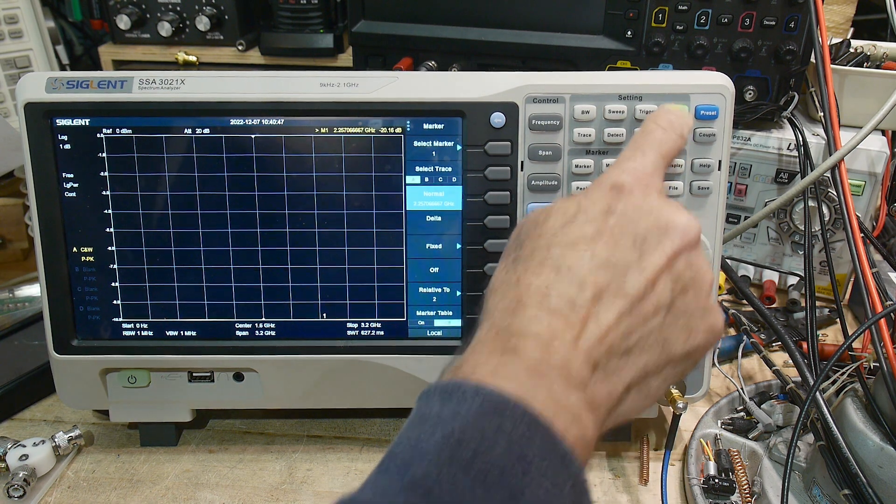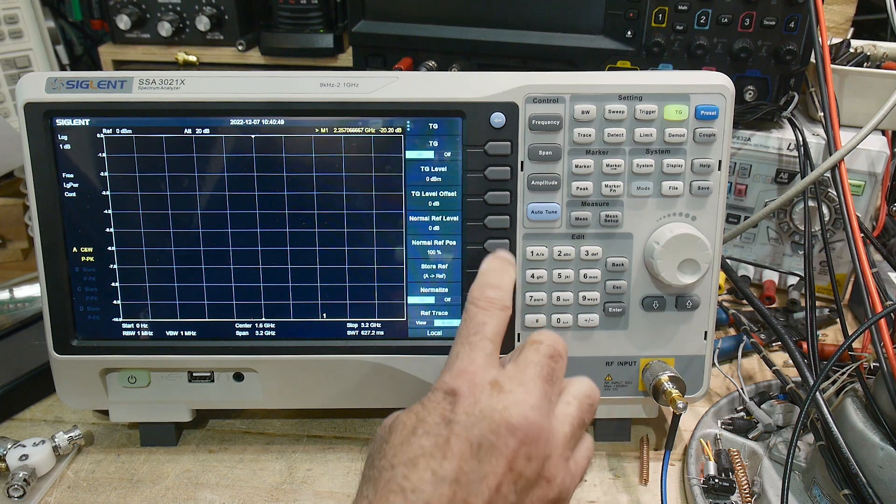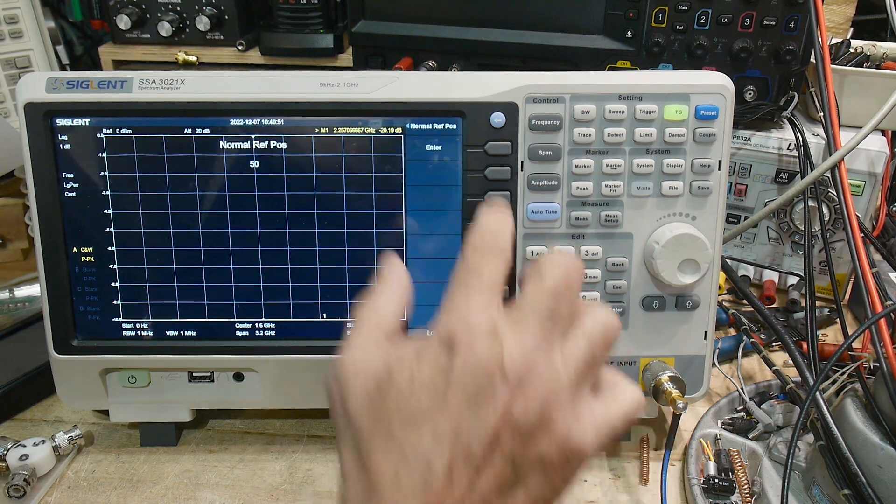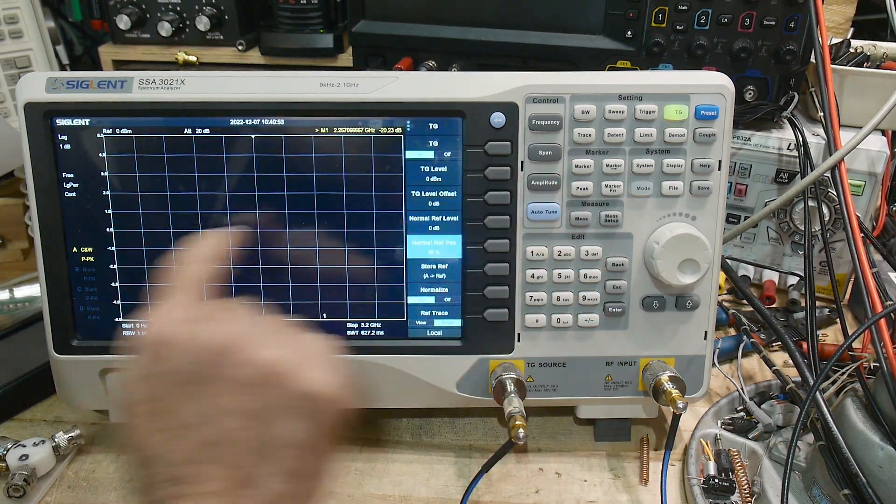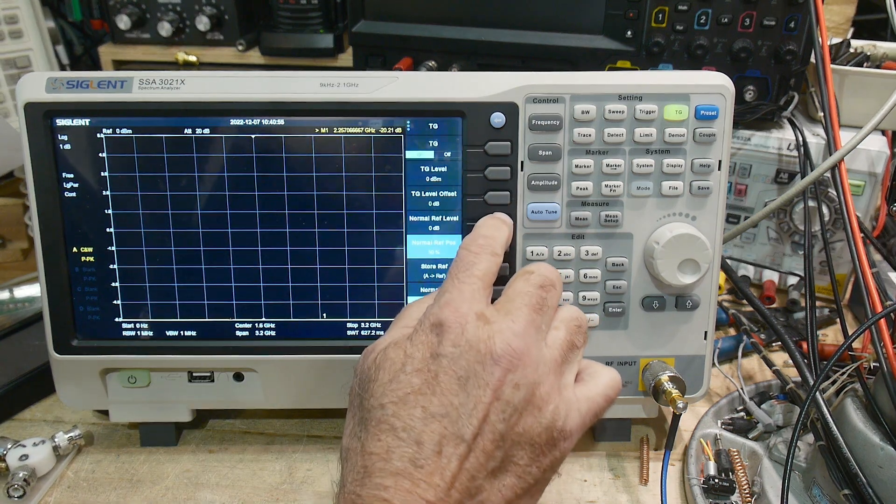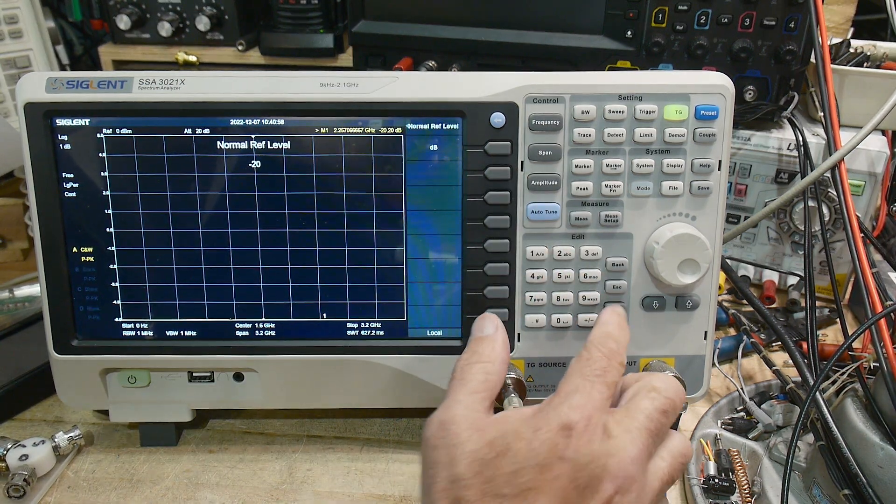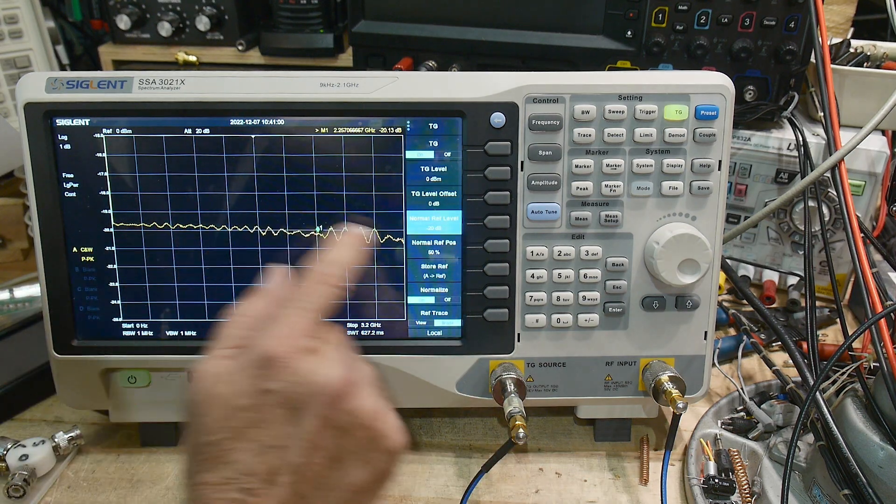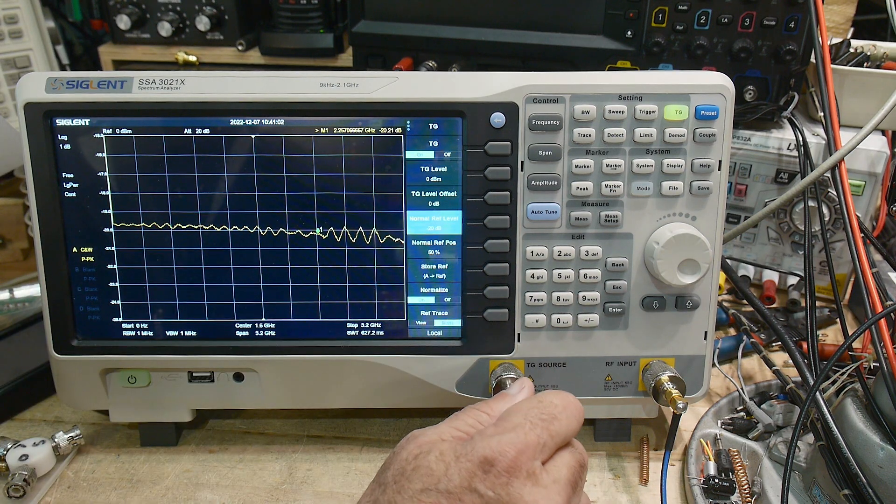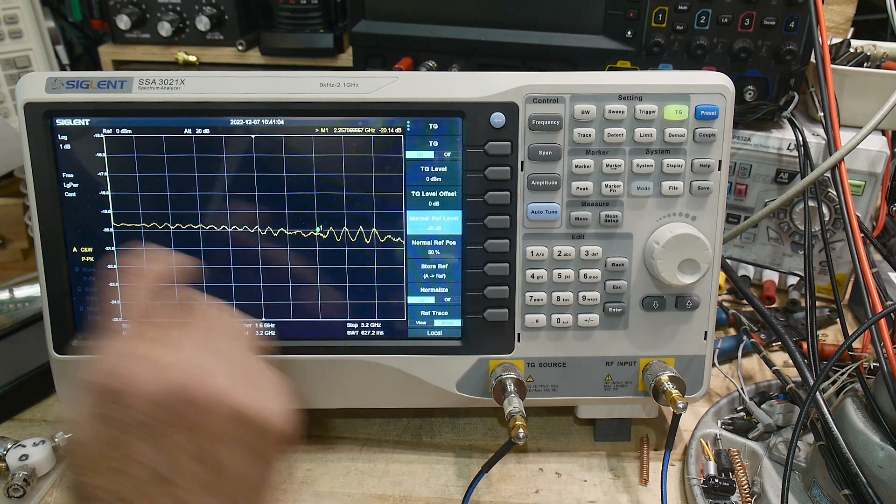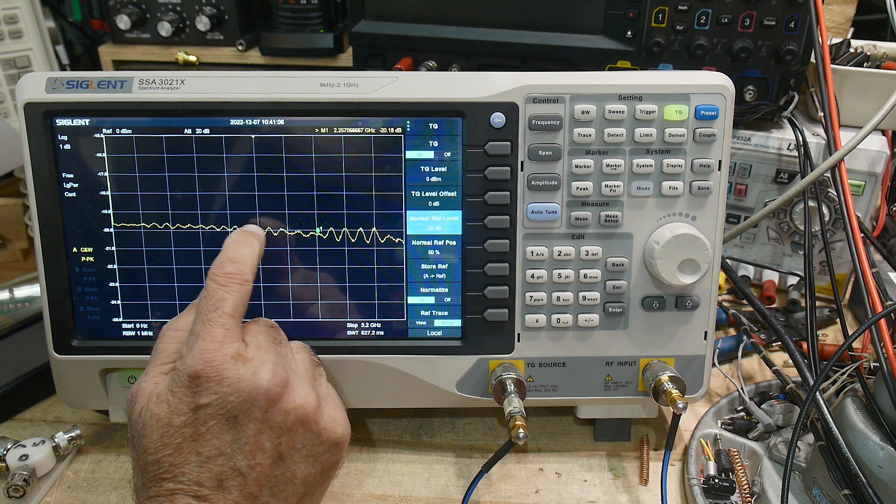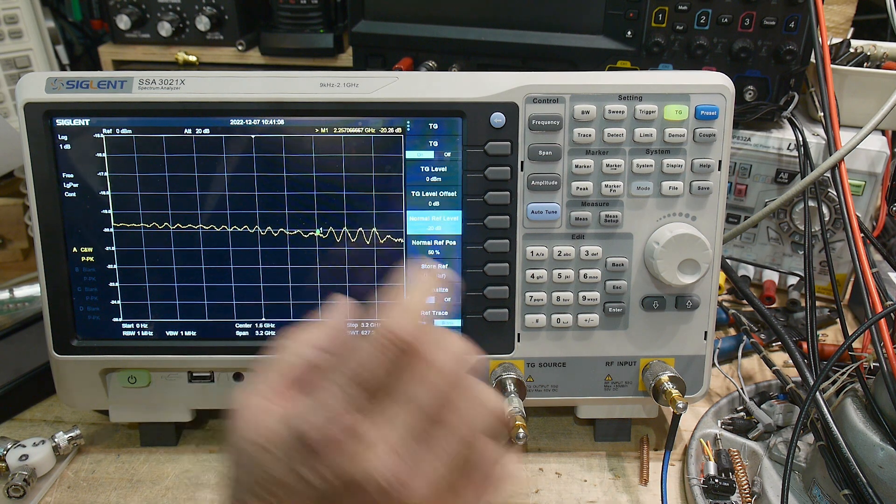We need to go back to that tracking generator. We want to set things around the 50 yard line here, and we're going to set the reference level to minus 20 because I know that's about what this thing is. So there we go, so the middle here is at minus 20. We have a minus 20 attenuator in there, and it works pretty well up to here, then it kind of droops off.